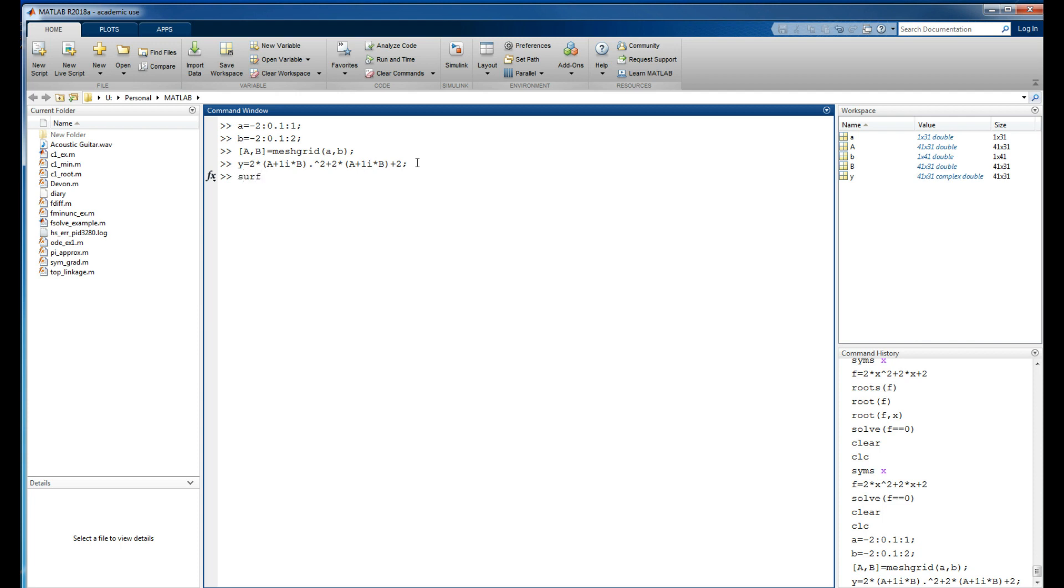Let's type in surfc—A, B, abs of Y. A and B label the real and imaginary axes, and abs of Y because Y is going to be a complex number as well. I want the absolute value of Y.